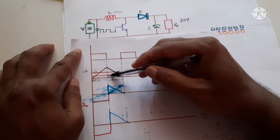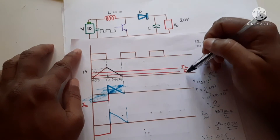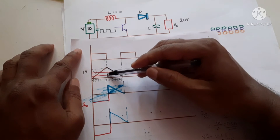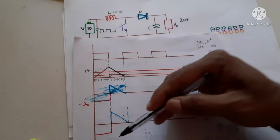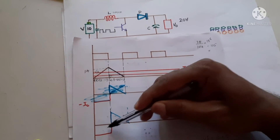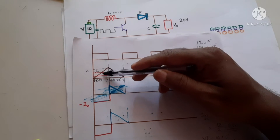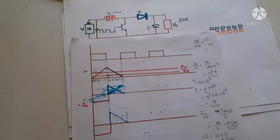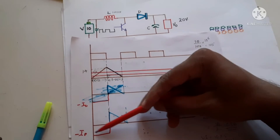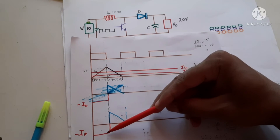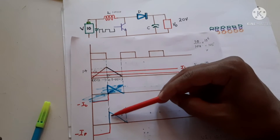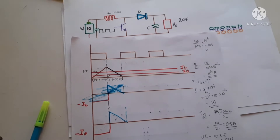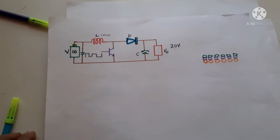This triangle portion is the load current I₀ — this portion goes to the load, and this triangle portion goes to the capacitor, which is the capacitor charging. During the on-time, the capacitor is giving charge to the load, so it is discharging, and that is called minus I₀. This is an almost constant current flowing out of the capacitor, while current is also coming into the capacitor — these two must be equal.